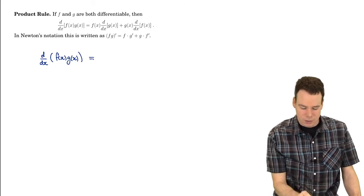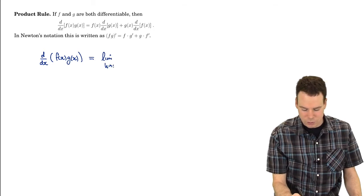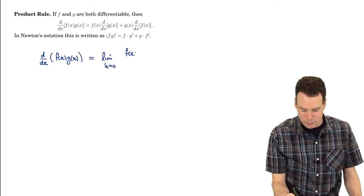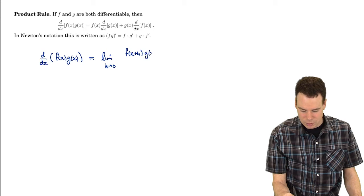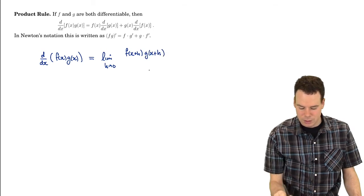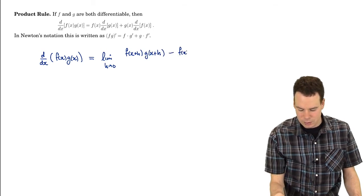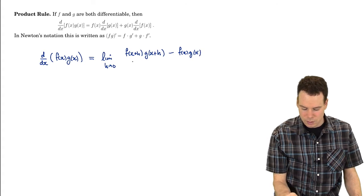So, we're looking at the derivative of the product. That is the limit as h goes to zero of f(x+h) times g(x+h), so it's the function at x+h minus the function at x all over h.